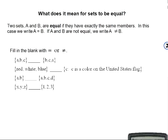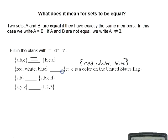Let's determine which pairs of sets are equal. The set containing {A, B, C} and the set containing {B, C, A} contain exactly the same elements, so these two sets are equal. The set {red, white, blue} and the set of all C such that C is a color on the United States flag are equal, since those colors are red, white, and blue. The next pair of sets are not equal because the second set has extra elements C and D. And the sets {X, Y, Z} and {1, 2, 3} are also not equal.